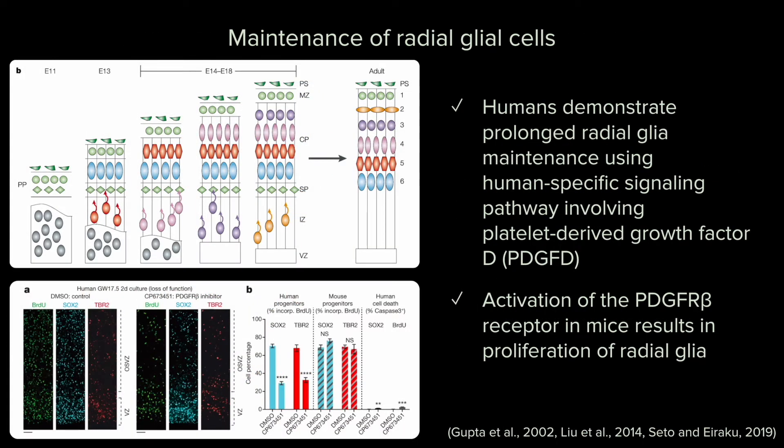Once neuroepithelial cells transform into radial glia, they are preserved by Notch signaling. The longer they stay radial glia, the longer they can produce progeny that will turn into neurons. Humans demonstrate a prolonged period of radial glia maintenance compared to mice using a human-specific signaling pathway involving platelet-derived growth factor D. Interestingly, activating the platelet-derived growth factor D receptor in mice results in the proliferation of radial glia.